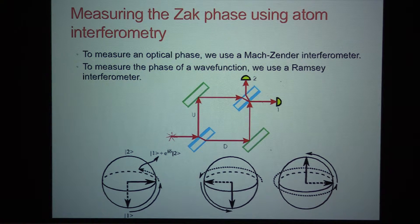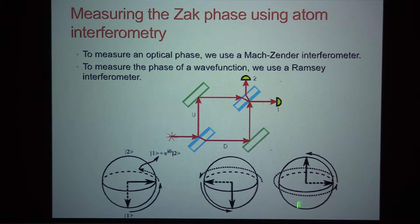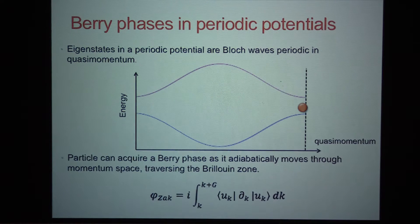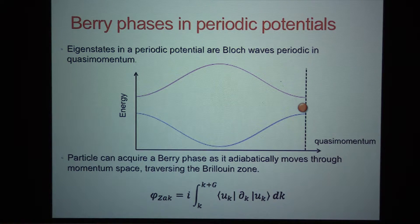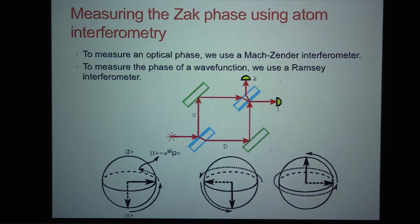These experiments are with a Bose-Einstein condensate, so they sit at the minimum of the dispersion of the bottom band, starting with a single spin state. After the phase evolution, you apply a second pi-over-two pulse, which is like the second beam splitter, and that takes you back to your measurement basis of up and down. You then measure with a Stern-Gerlach experiment the population up and the population down. For the SSH model, the band structure has two bands — because you have A and B sites — and the difference in the Zak phase between the two bands is pi.